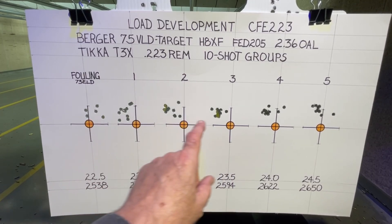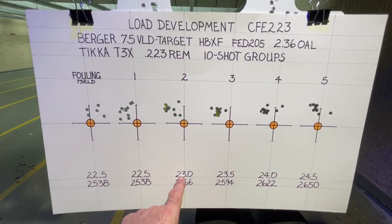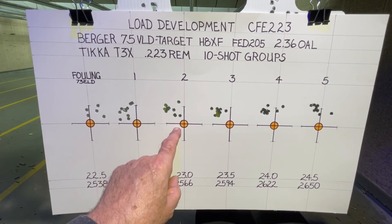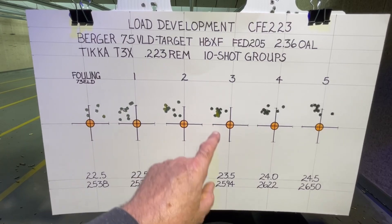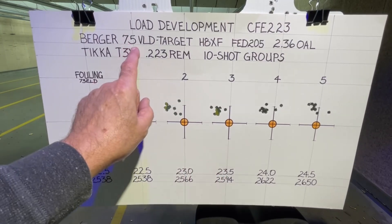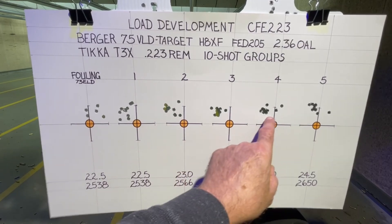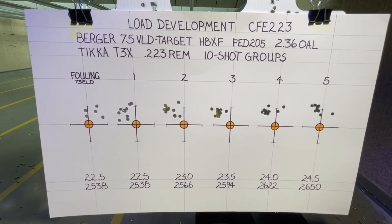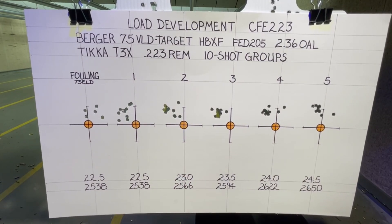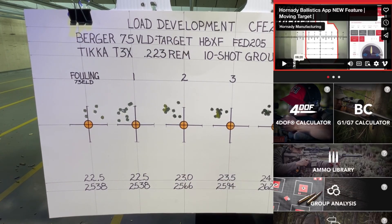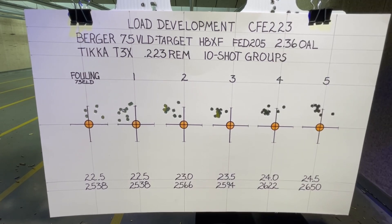Got a pretty tight cluster right here with a flyer on either side, but it looks like as that charge weight was increasing this was the best load at 23 grains with a 73 grain ELD match. But it looks like this bullet, the 75 VLD target by Berger, it looks like it prefers the heavier charge weights. Anyway, we will take these home and measure these with the Hornady Ballistics app using the group analysis function and we will see how they compare so stay tuned.